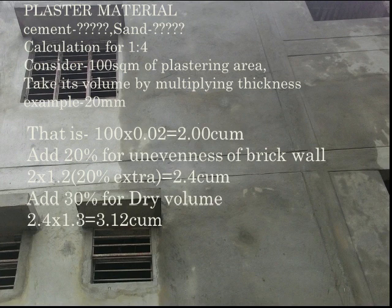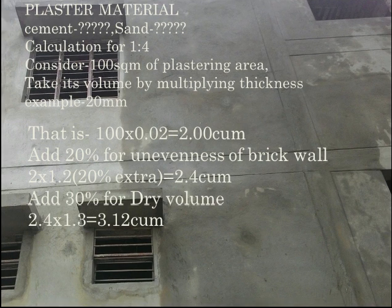Add 20% for unevenness in a brick wall, that is 2 x 1.2 equals 2.4 cubic meters. Now add 30% for the dry volume — the material we are taking is in dry condition, so this dry volume factor is applied. That is 2.4 x 1.3 equals 3.12 cubic meters.